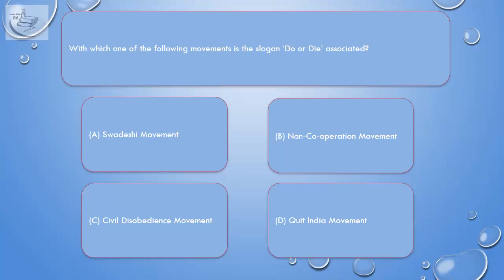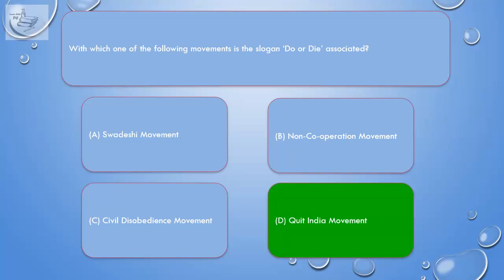Question: With which one of the following movements is the slogan 'Do or Die' associated? A. Swadeshi Movement, B. Non-Cooperation Movement, C. Civil Disobedience Movement, D. Quit India Movement. Correct answer is D: Quit India Movement.